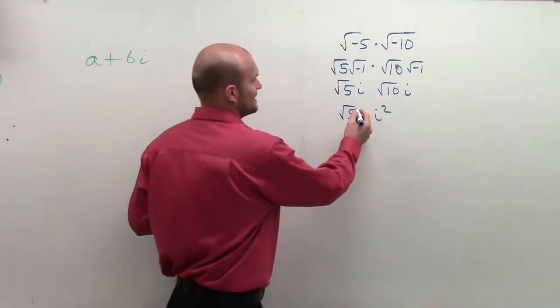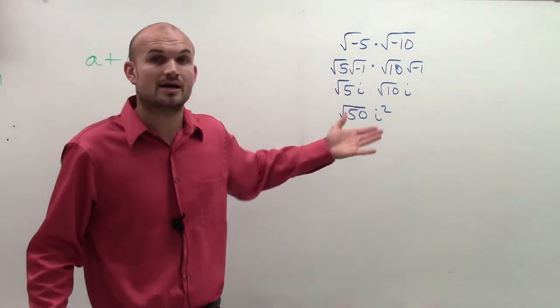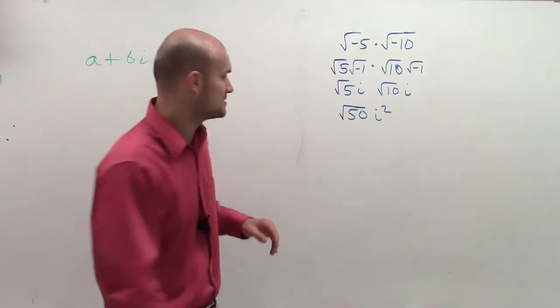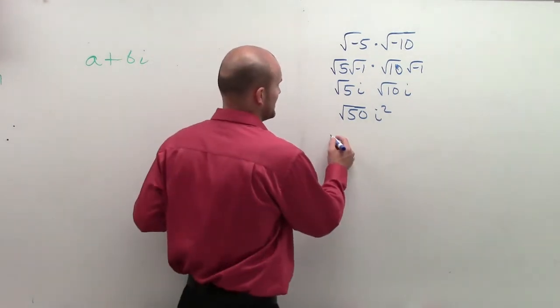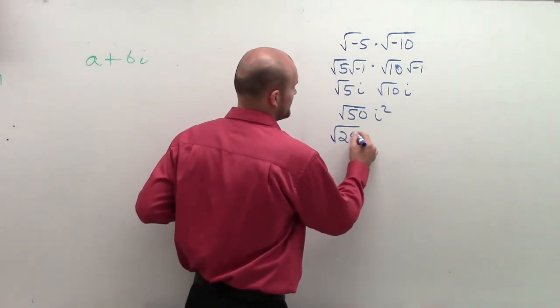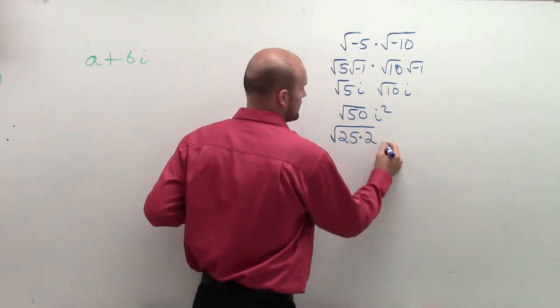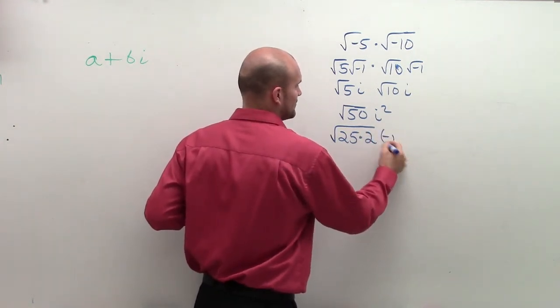So now I can simplify my square root of 50 by simplifying our radicals. So I can say that I can rewrite that again as 25 times 2 times i squared, which is now going to be negative 1.